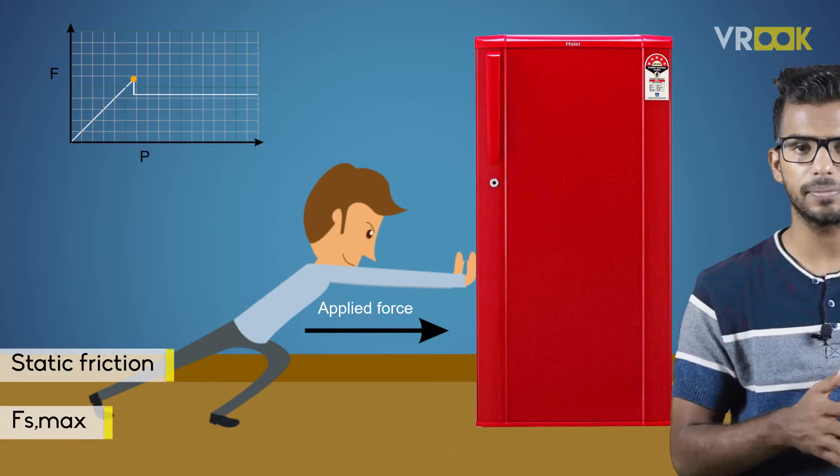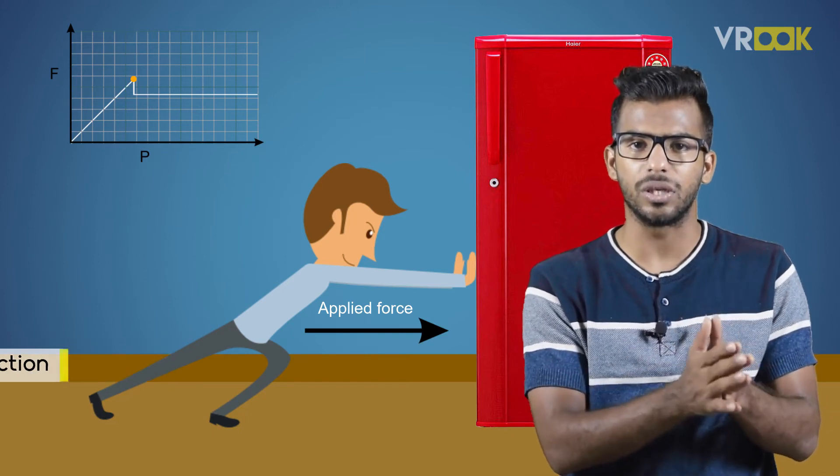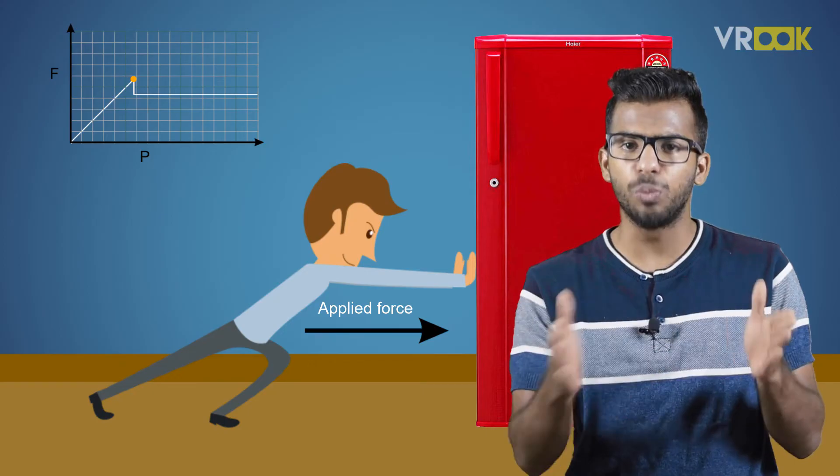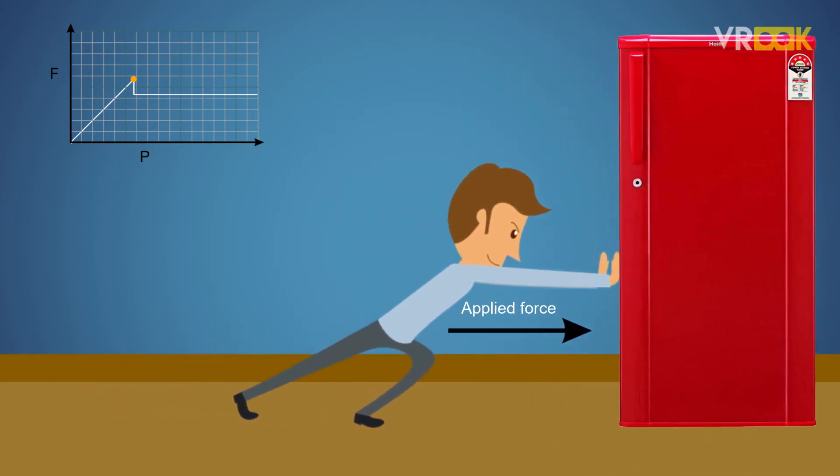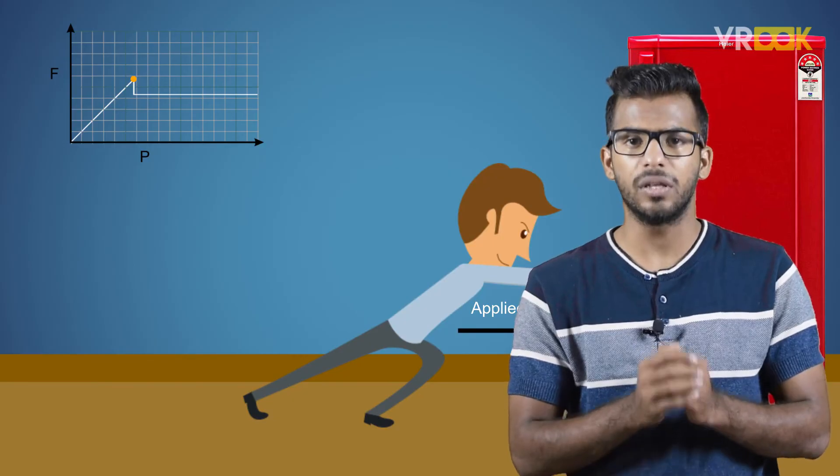Once you have overcome the limiting static friction, the amount of force required to keep the fridge moving will be less. But there will be some frictional force even when you are moving the fridge. This is called dynamic friction.